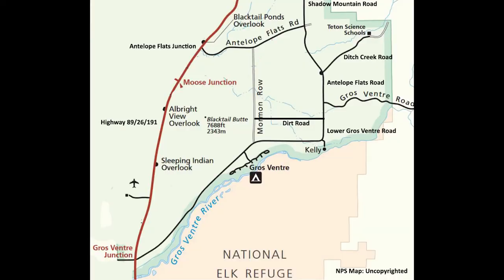Shown on the screen is an excerpt of a National Park Service map. We can see that Antelope Flats is just to the east of Blacktail Butte and just to the north of the Grovant area. It runs north until Antelope Flats Road dog-legs to the left, connecting the north-south running Antelope Flats Road with the roughly east-west running Antelope Flats Road, which goes all the way to Highway 89.